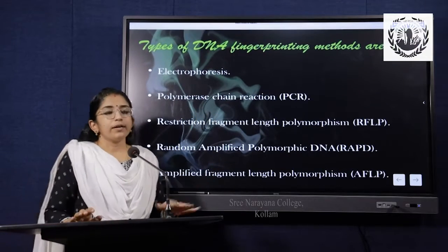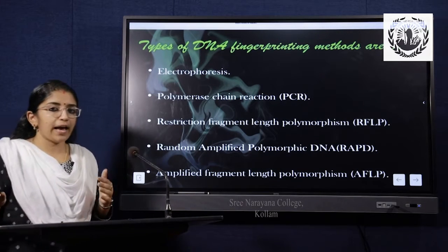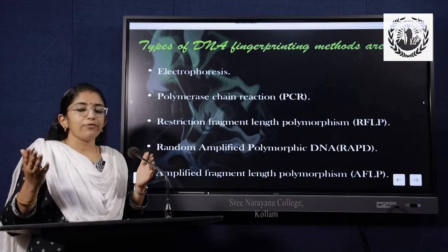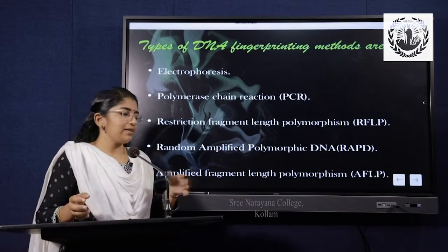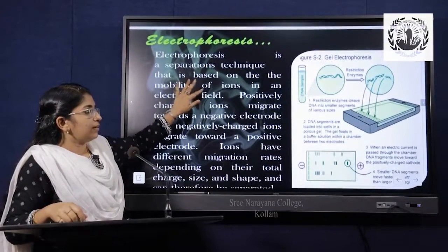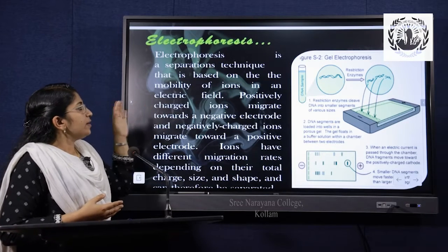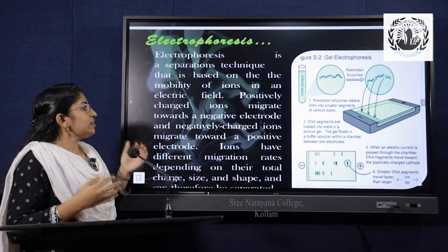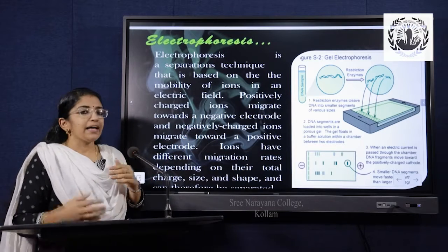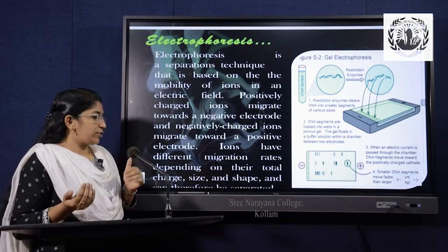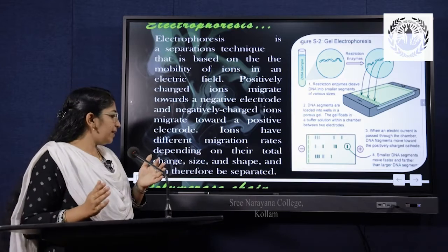The methods of DNA fingerprinting include: electrophoresis, PCR (polymerase chain reaction), restriction fragment length polymorphism (RFLP), random amplified polymorphic DNA (RAPD), and amplified fragment length polymorphism (AFLP). Electrophoresis is a separation technique based on the mobility of ions in an electric field. Positively charged ions migrate towards the negative electrode and negatively charged ions migrate towards the positive electrode. Ions have different migration rates depending on their total charge, size, and shape, and are therefore separated.